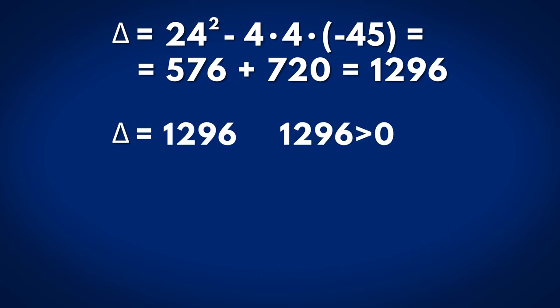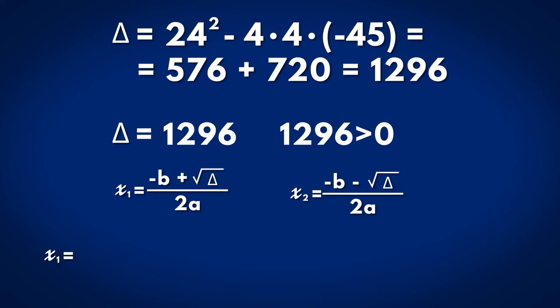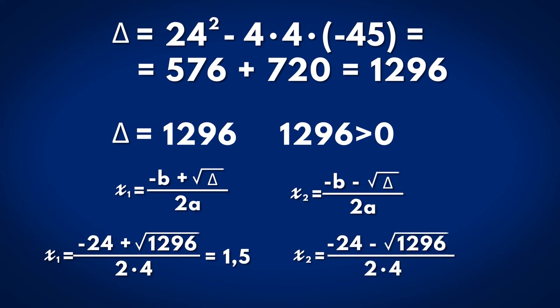so there are two different real solutions that are calculated using the formulas. Finally, we get... The length of the segment is a positive number, so between the two solutions we will only choose 1.5.